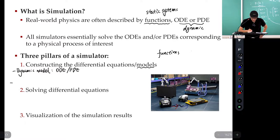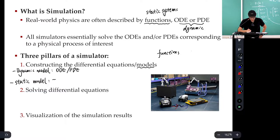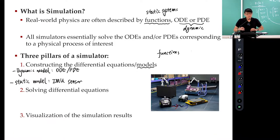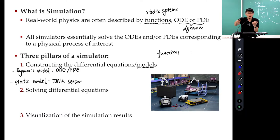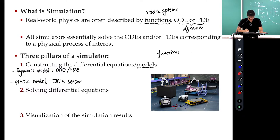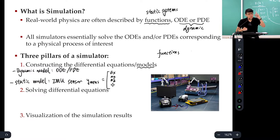There are also static relations — static models. For example, sensor models are typically static. Consider an IMU sensor: the measurements — acceleration on three axes (ax, ay, az) and angular velocities (alpha-dot, beta-dot, gamma-dot) — are the output. Depending on the chip you buy, it may return different formats, but essentially it gives you six pieces of information.